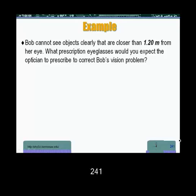Okay, Bob here cannot see objects clearly that are closer than 1.2 meters from his eye. What prescription eyeglasses would you expect the optician to prescribe to correct Bob's vision problem?